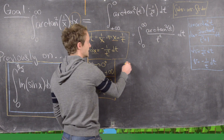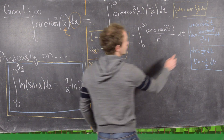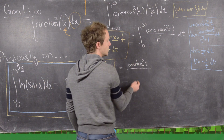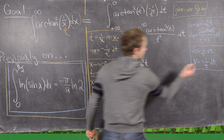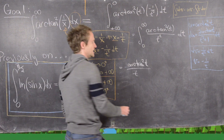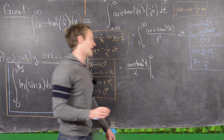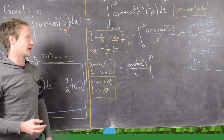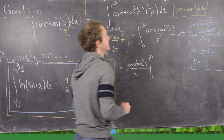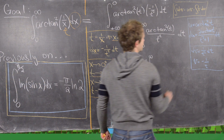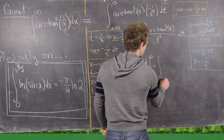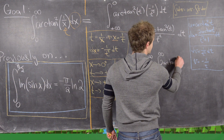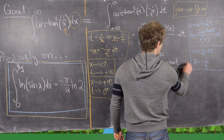Applying the formula, u times v gives us minus arctan squared(t) over t, evaluated from 0 to infinity. Then minus the integral of v du — but v has a minus sign built in, so that cancels, giving us plus the integral from 0 to infinity of 2 arctan(t) over t(t² + 1) dt.